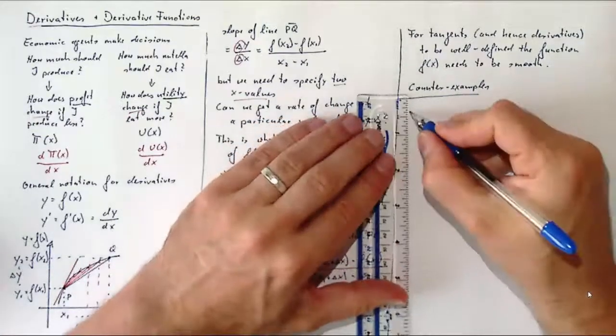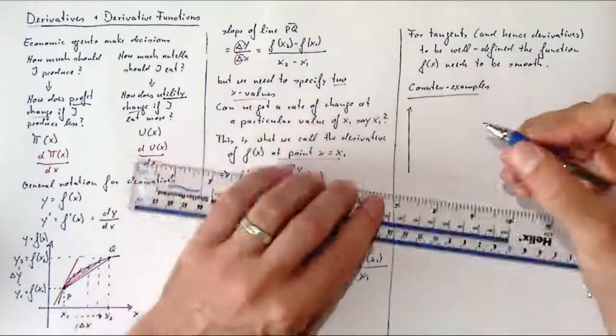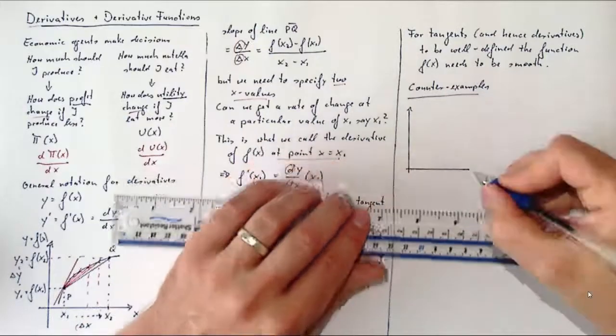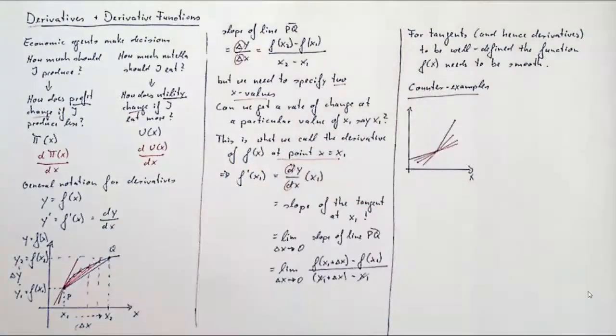So here, for instance—sorry for the little skip in the clip which we'll see in a moment—this blue function has a kink, and at that kink we can think of several lines being the tangent to that function. So that is a not very well-defined tangent.